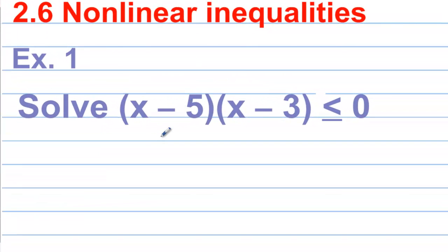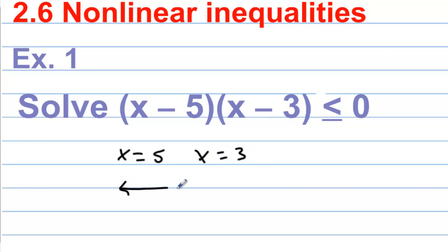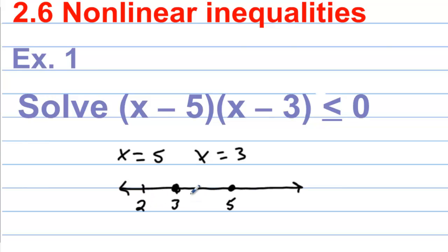Let's get the values where this thing is exactly equal to 0. That would be at x equals 5 and at x equals 3. Now we're going to put those two values on a number line. We have 3 here, and since we can equal 0, it's okay to include 3 and it's okay to include 5. Now we want to test some values in between these numbers.